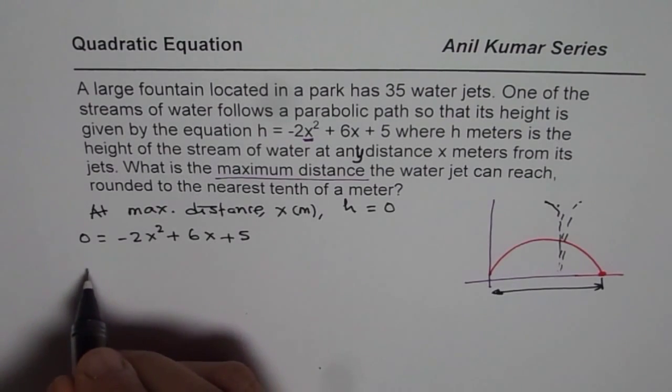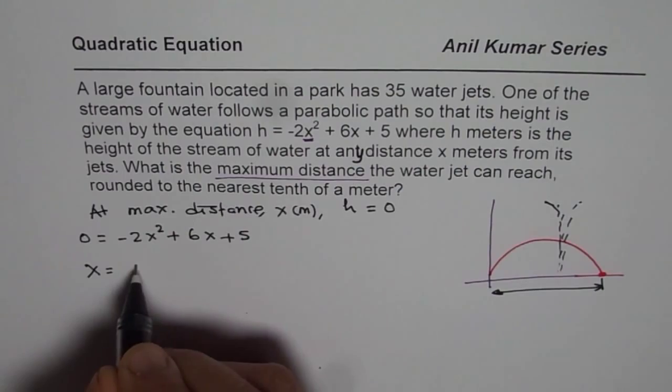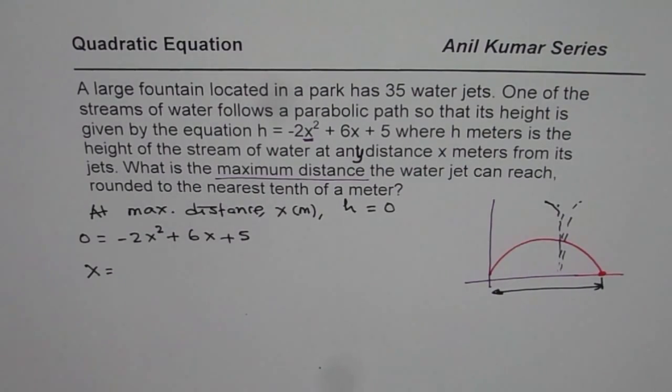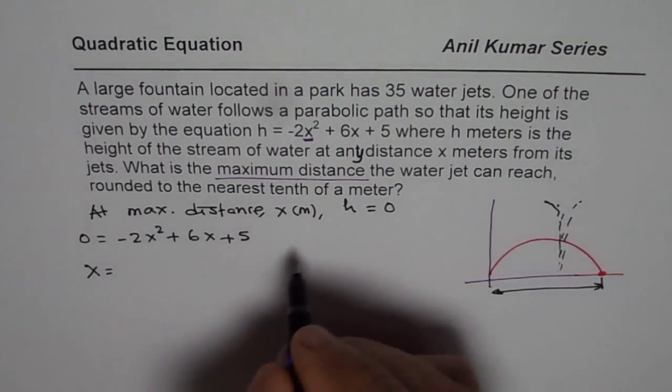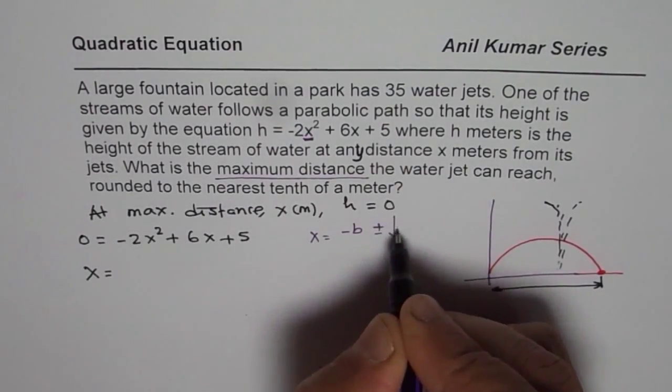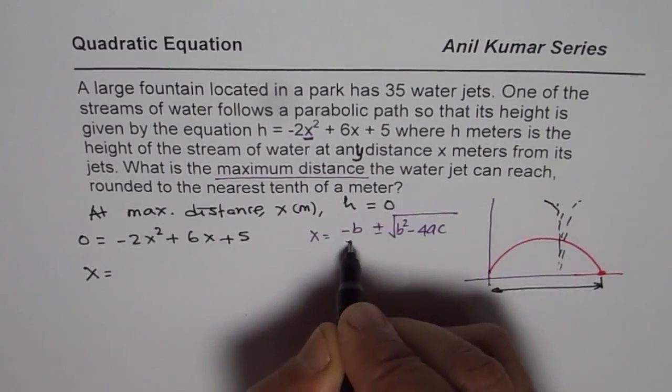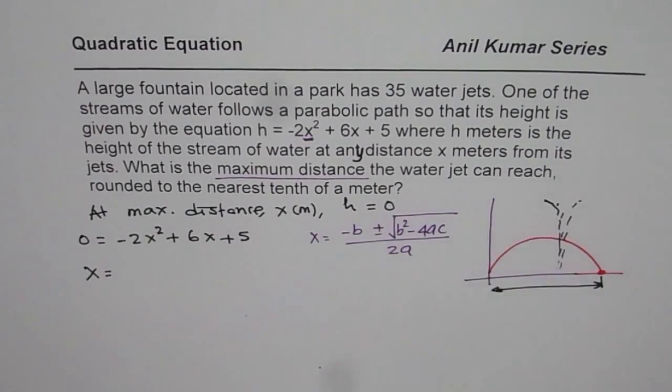So in this particular case, x is equal to minus b. Let me write down the quadratic formula first for you, and then we will use it. So we have x equals minus b plus minus square root of b squared minus 4ac divided by 2 times a, right?